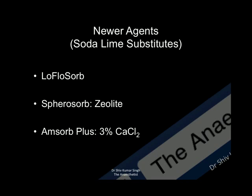There are newer soda lime substitutes: Low Flow Sorb and Spirosorb, which contain zeolite, and mSorb Plus, which does not have any hydroxides — it only has three percent calcium chloride.